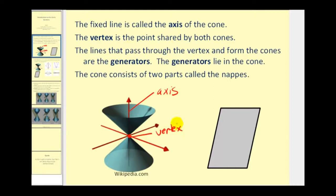Next, the lines that pass through the vertex and form the cones are called the generators. The generators lie in the cone, and there would be an infinite number of them that form the two cones. And then lastly, the cone consists of two parts called the napes.